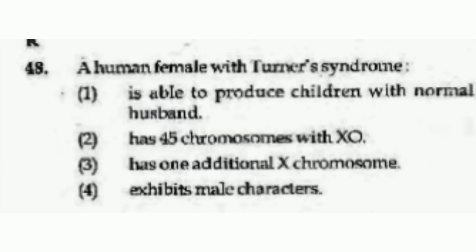A human female with Turner's syndrome — options are: is able to produce children with a normal husband; has 45 chromosomes with XO; has one additional X chromosome; or exhibits male characters. The correct answer is option number 2, Has 45 chromosomes with XO.